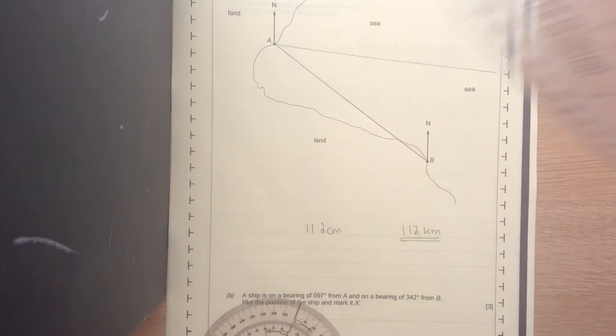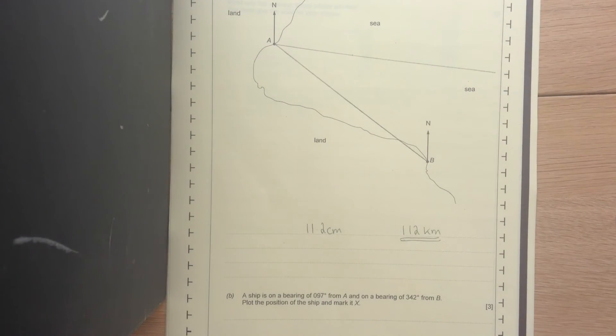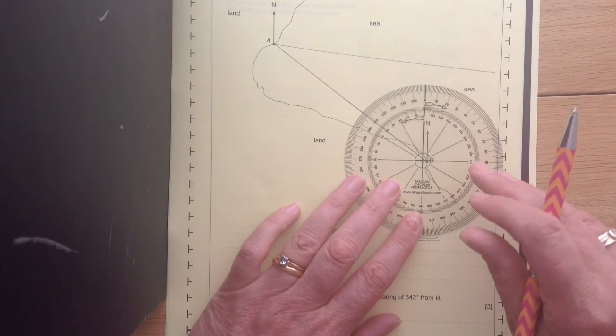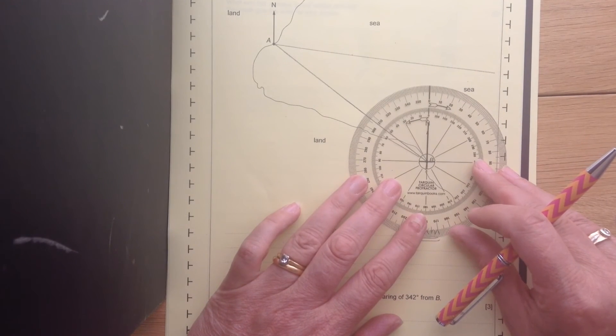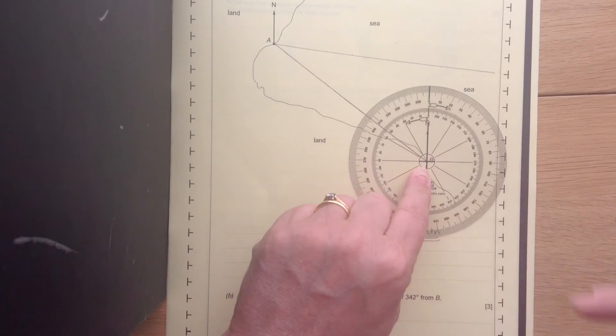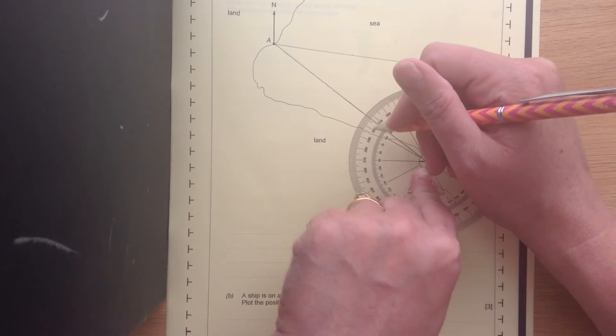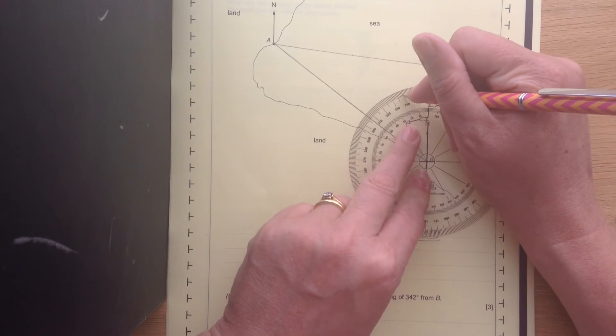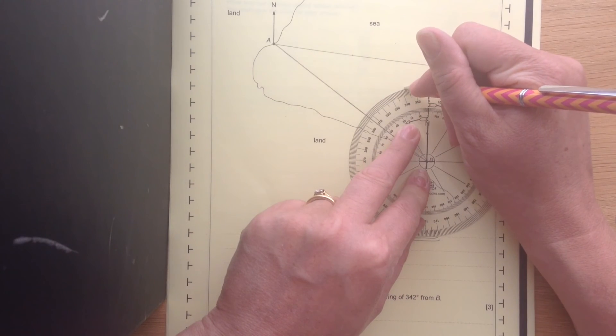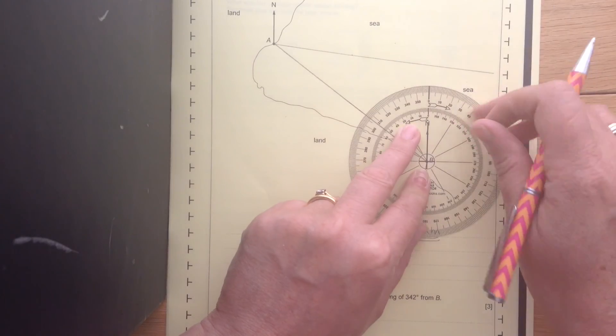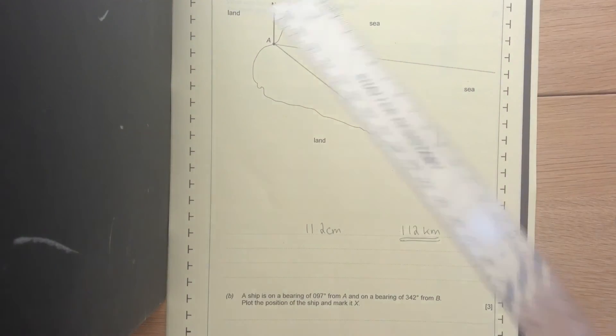But we don't know where it is along the line. We know it's also on a bearing of 342 from B. So exactly the same there. Angle measure on B, 0 on the north line. We always measure from the north line and always measure in a clockwise direction. Going around to 342. Draw this line on.